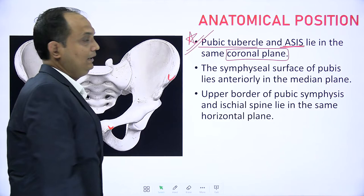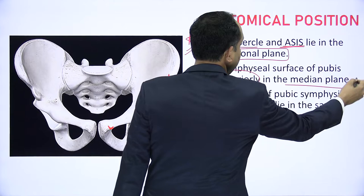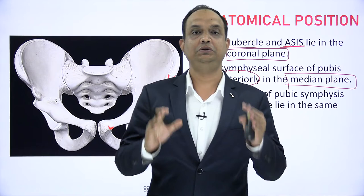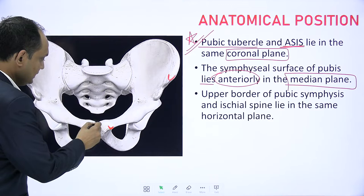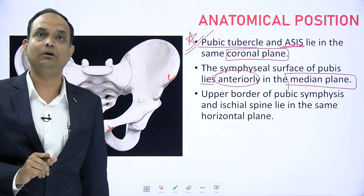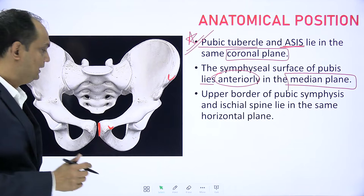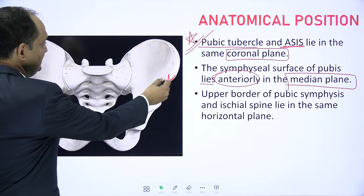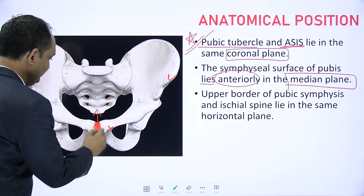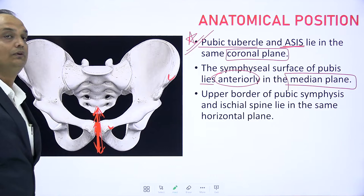Another important thing is that the symphysial surface of pubis lies anteriorly in the median plane. In the anatomical position, your pelvis remains straight, so you cannot hold this individual hip bone in an oblique plane. Since the hip bone is a part of the pelvis, when you will have the anatomical position of the hip bone, you are actually putting the pelvis in anatomical position. The first condition is that ASIS and pubic tubercle should be in one coronal plane. The second is that the symphysial surface of the pubis, which forms the pubic symphysis, must be in one median plane.